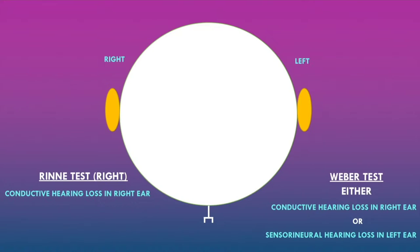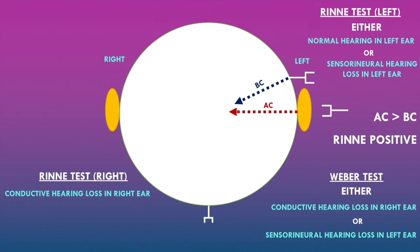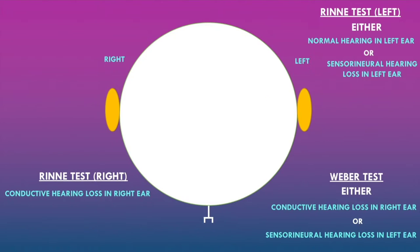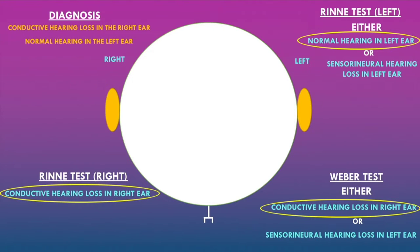The Rinne test in the left ear showed air conduction greater than bone conduction — a Rinne positive test — indicating either normal hearing or sensorineural hearing loss in the left ear. However, the Weber test findings indicate no pathology in the left ear, so there is normal hearing in the left ear. The overall diagnosis is conductive hearing loss in the right ear and normal hearing in the left ear.